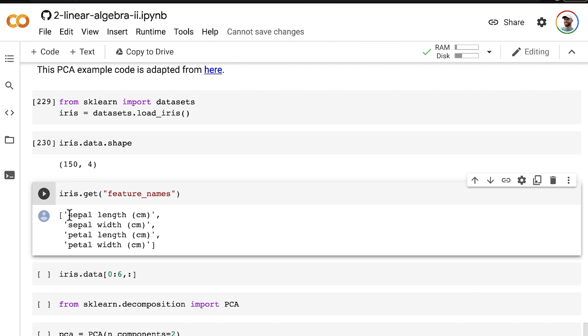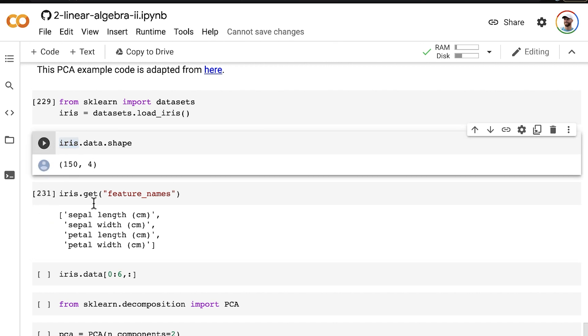The biology doesn't matter too much. The point is we have four measurements of plant anatomy, specifically of different irises, 150 irises, and we have four measurements per iris.